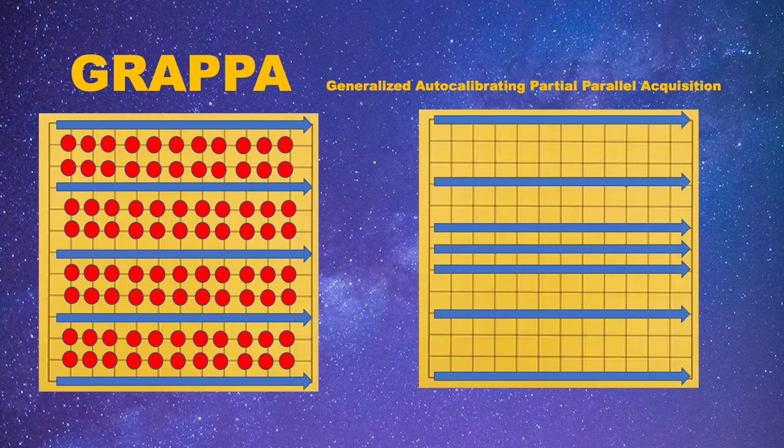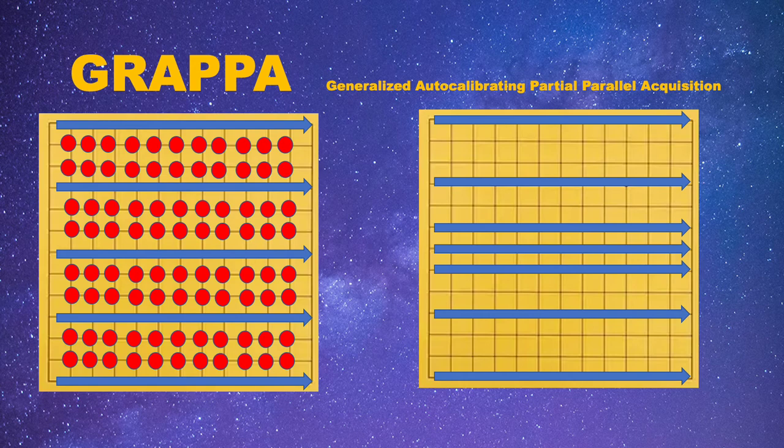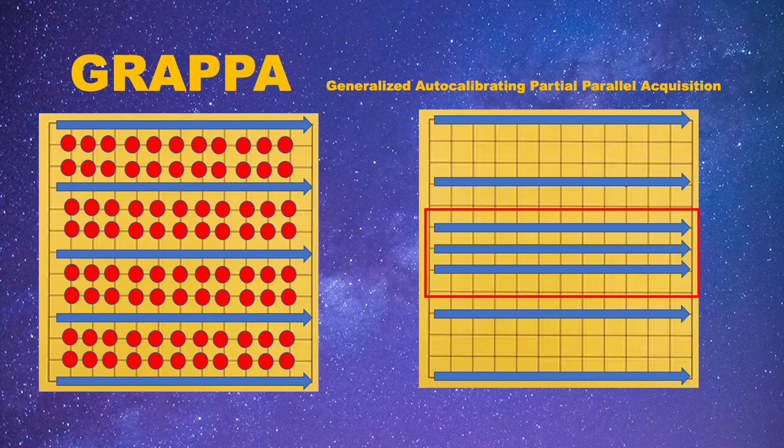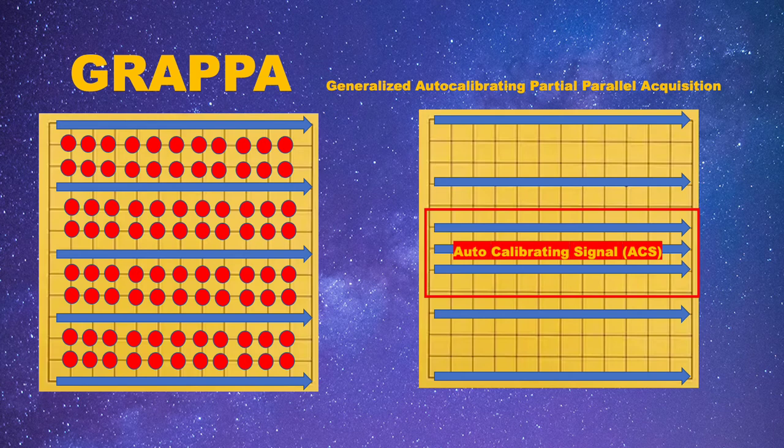In order to fill these missing points, we will need to observe what's the rule between these known points and unknown points. Here, we will acquire part of the full k-space called the Auto-Calibration Signal, or ACS, to help us find this rule. This fully sampled k-space can be acquired along with accelerated k-space or in a separate scan.